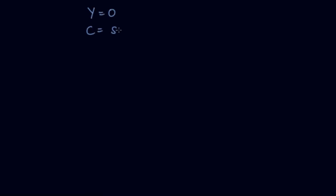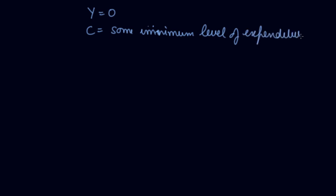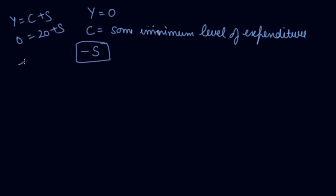When your income is zero there is still some minimum level of consumption expenditure. At that point you withdraw your savings, so your saving becomes negative. For example, if income is zero and consumption is 20, then saving equals minus 20. When consumption is greater than income, saving is negative.